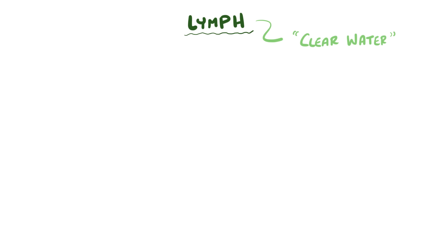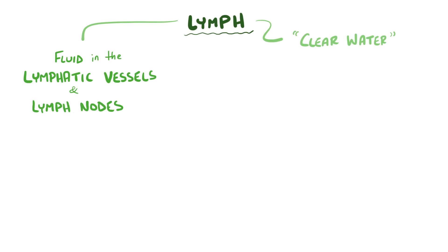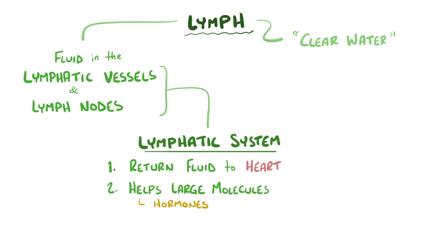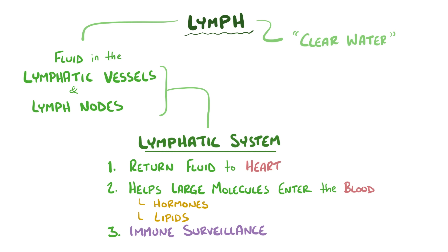Lymph means clear water in Latin, and it describes the fluid that flows through the lymphatic vessels and lymph nodes, which make up the lymphatic system. The three major roles of the lymphatic system are that it returns fluid from the tissues back to the heart, it helps large molecules like hormones and lipids enter the blood, and it helps with immune surveillance to keep infections from running amok.